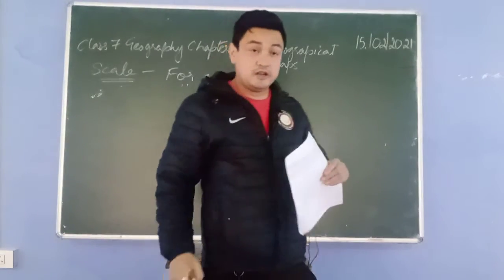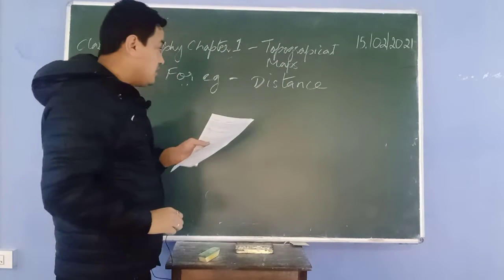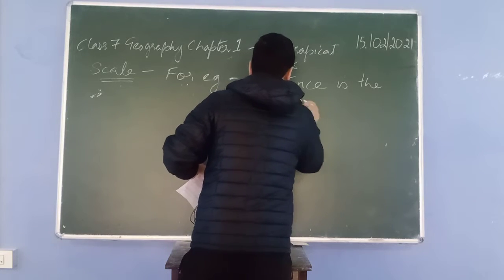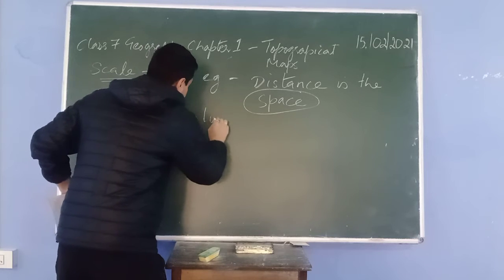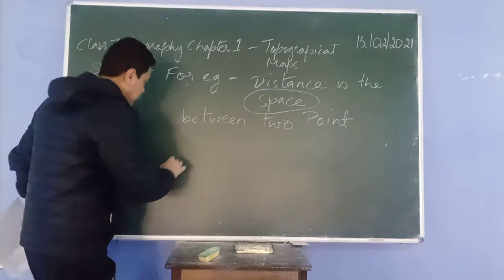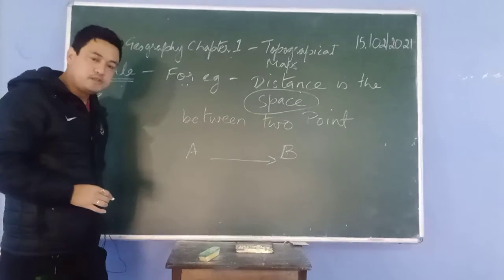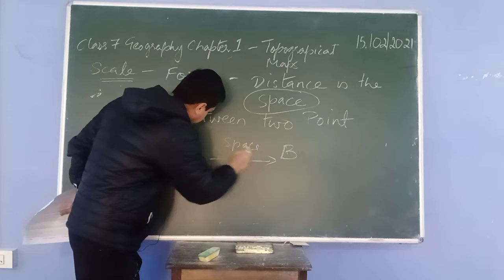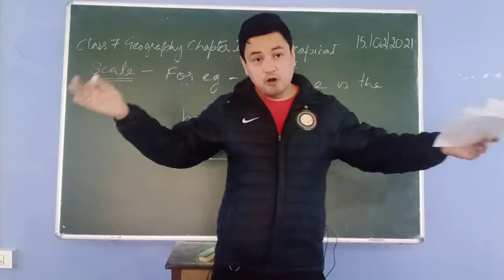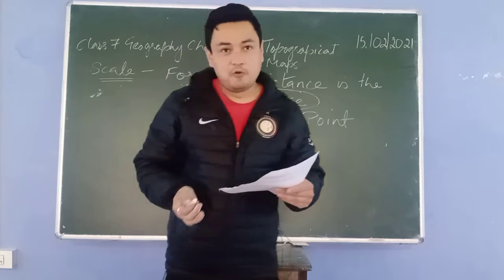Distance means the space between two points. Distance is from point A to point B — the space between two points A and B. It may be short, it may be long; it depends upon the particular distance of a particular area. In India, we use the metric system to measure the distance.